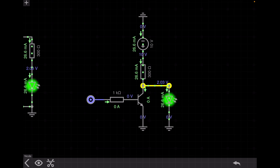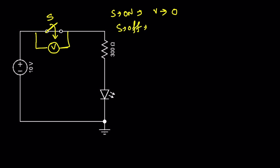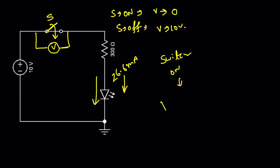This is the switch, which is sometimes on and sometimes off. As shown in the simulation, when the switch is on, the voltage across the switch is 0 volt. When the switch is off, the voltage across the switch is 10 volt. When the switch is turned on, the LED turns on because 26.6 milliampere flows through it. So the first condition for something to act as a switch is: when the switch is on, the voltage drop across it should tend to zero.